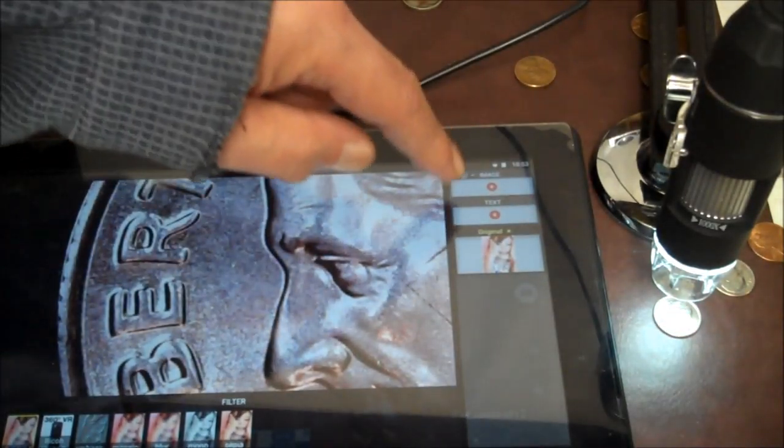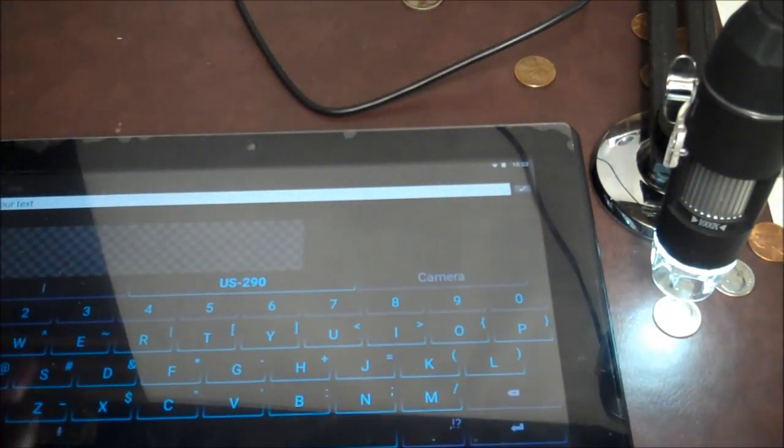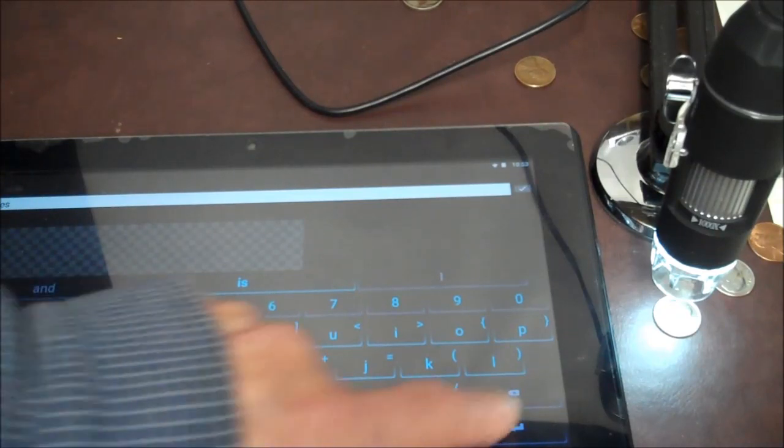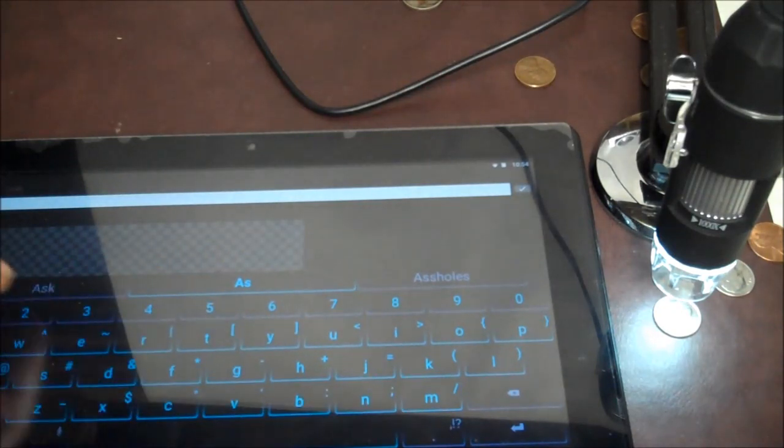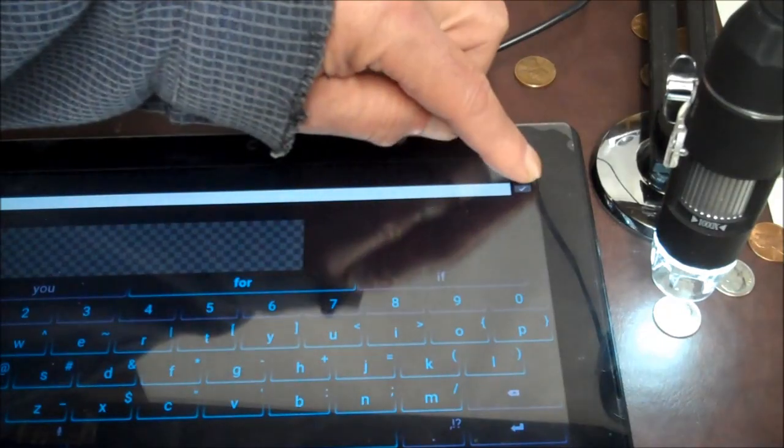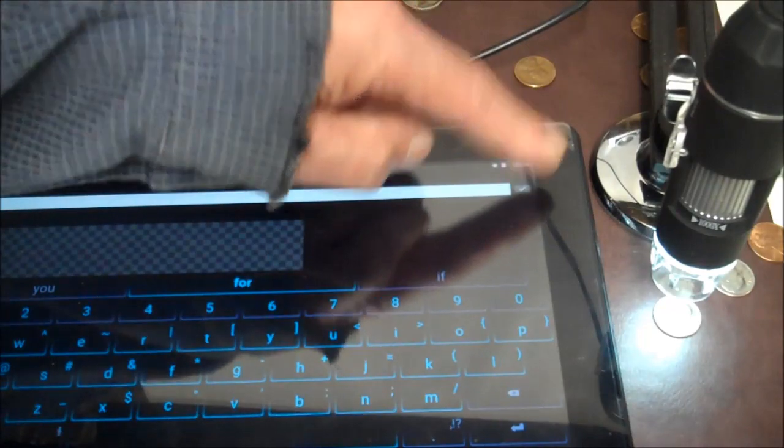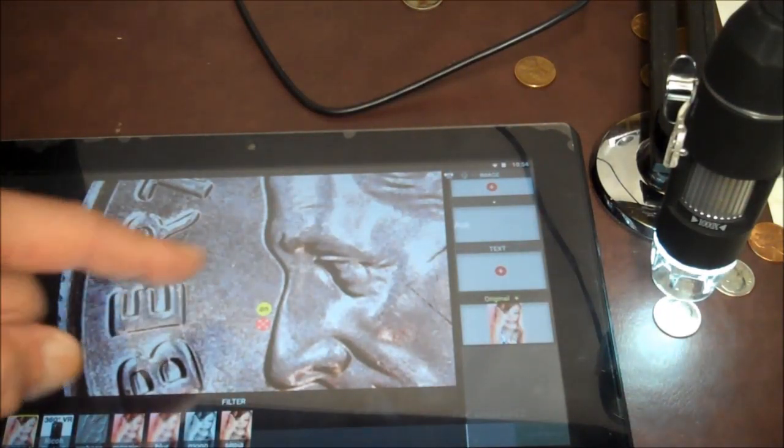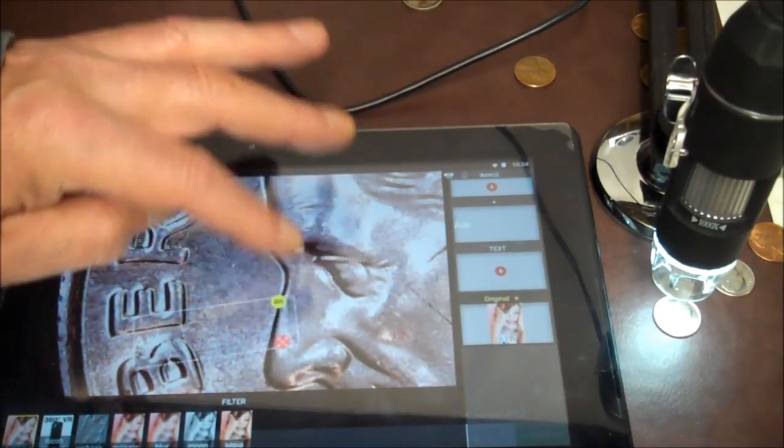And of course you could add text. Just type in your text. ASD. Space. Not assholes. I didn't type that. I typed ASD. Okay. Oh boy. Then you press check over here. And it goes on your picture. Not too good I might add. But you can spread it out by this button here.